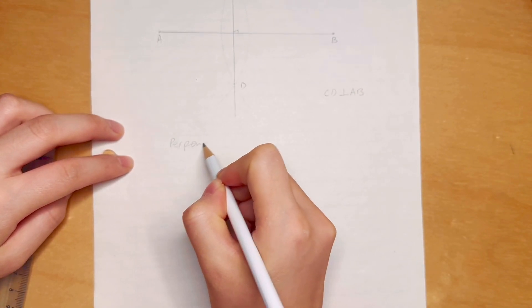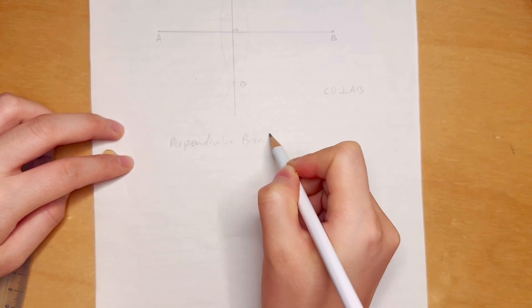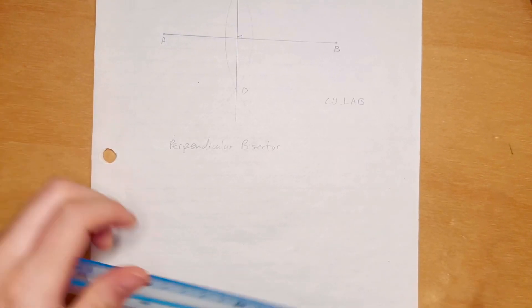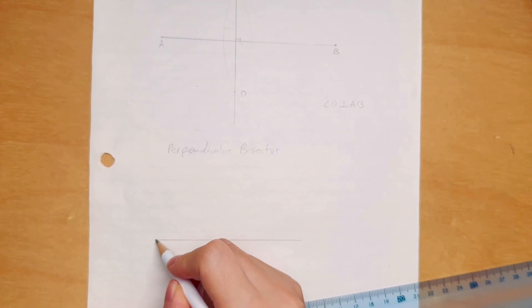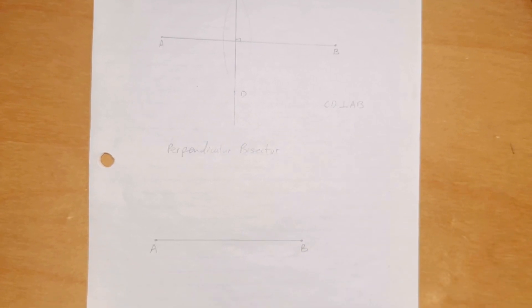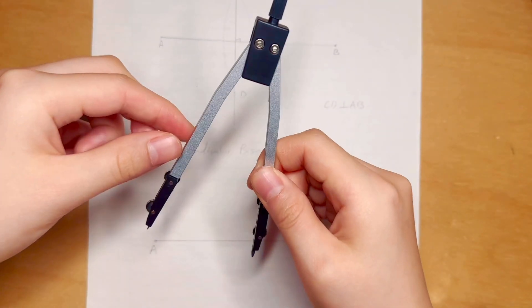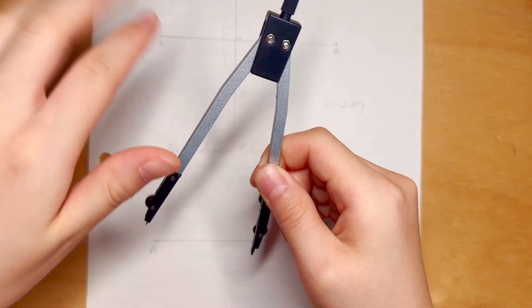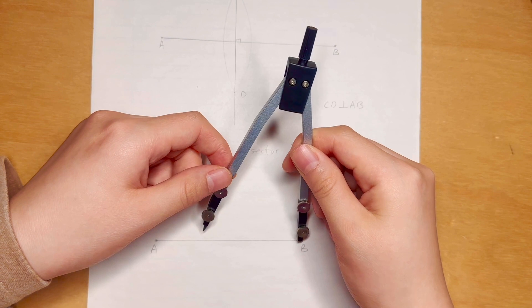The only thing we're going to do differently is set the radius and don't let it change. Note that the radius must be greater than half of the line segment, or else the arcs are not going to intersect or are going to intersect at only one point, and that's not helpful.